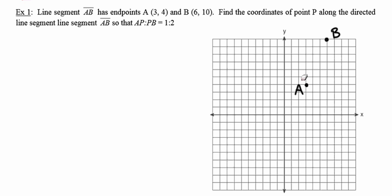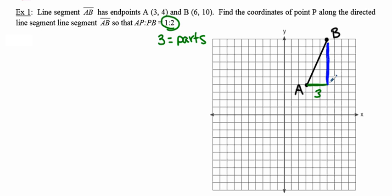There are points A and B. I'll grab my straight edge and use my ruler to connect them. If I'm interested in dividing these into a ratio of 1 to 2, that means I need to divide the segment into three equal parts. I'm going to look at the horizontal component of that line segment — sketched in green — which is exactly three units long, and the vertical component — sketched in blue — which is six units long.